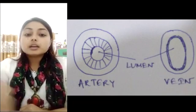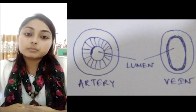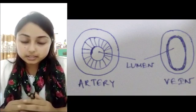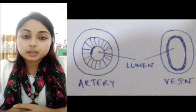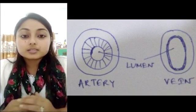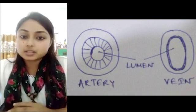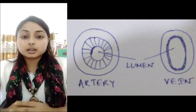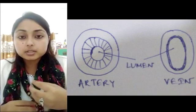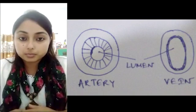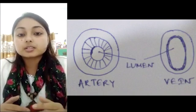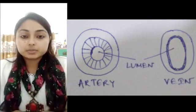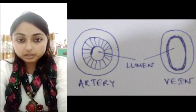Now we will talk about the next component of our circulatory system: blood vessels. Blood vessels are branched tubes that extend from the heart to all parts of our body. They are branched so that the circulatory fluid can reach every part of the body. These blood vessels are of three types: namely arteries, veins, and capillaries.